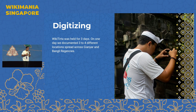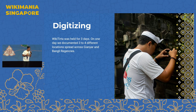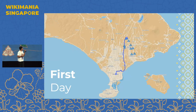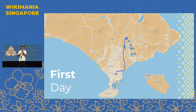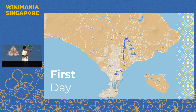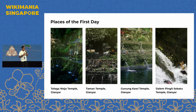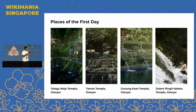Di dalam prosesnya, kami menyelenggarakan proyek ini selama 3 hari, dan setiap harinya kami mengeksplorasi 3-4 lokasi di lapangan. Di hari pertama, kami mengunjungi 4 lokasi di wilayah Gianyar. Pagi-pagi kami berangkat dari Denpasar menuju tempat yang pertama di Kecamatan Tegalalang. Ada 4 lokasi yang sudah kami dokumentasikan: Telaga Wajah Tempel, Taman Tempel, Gunung Kawi Tempel, dan Pingit Sebatu Tempel.